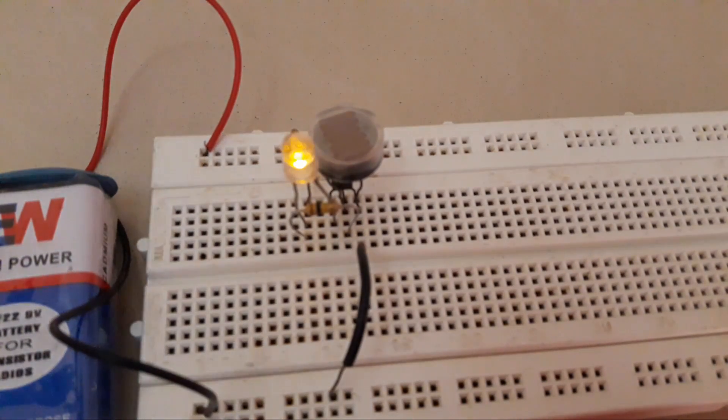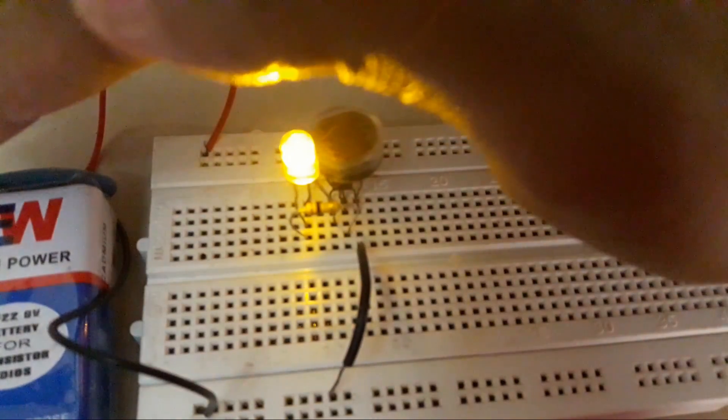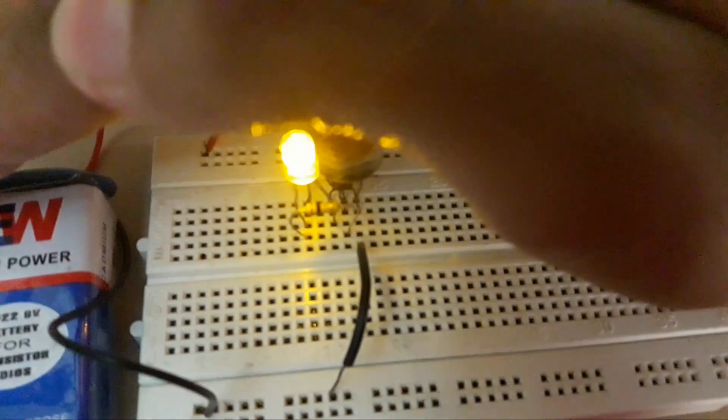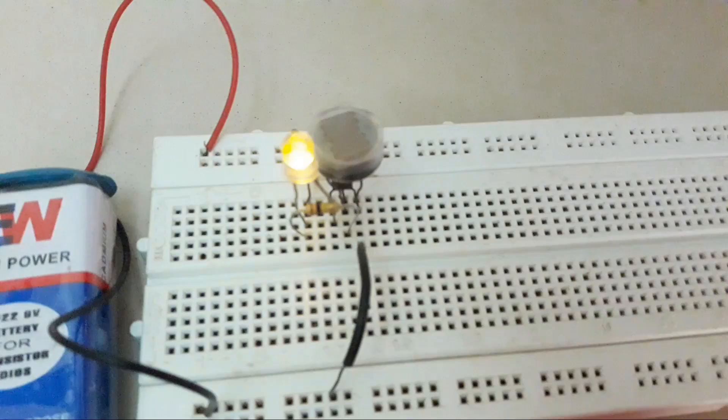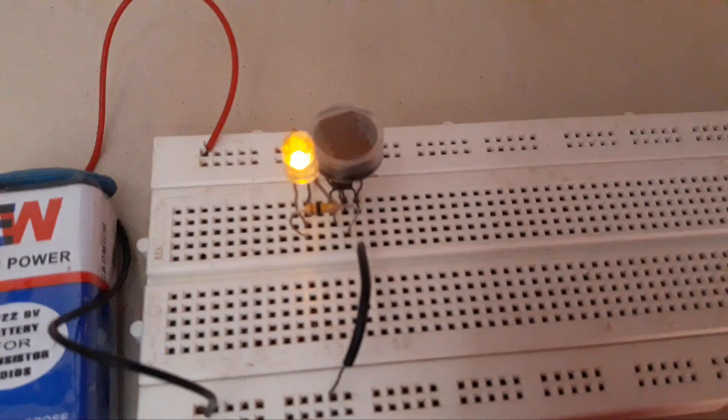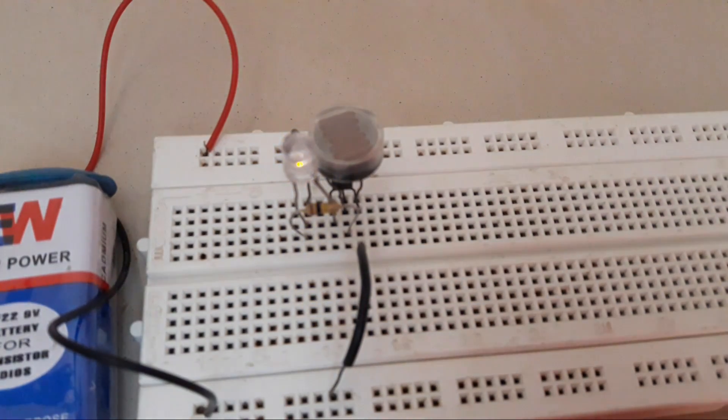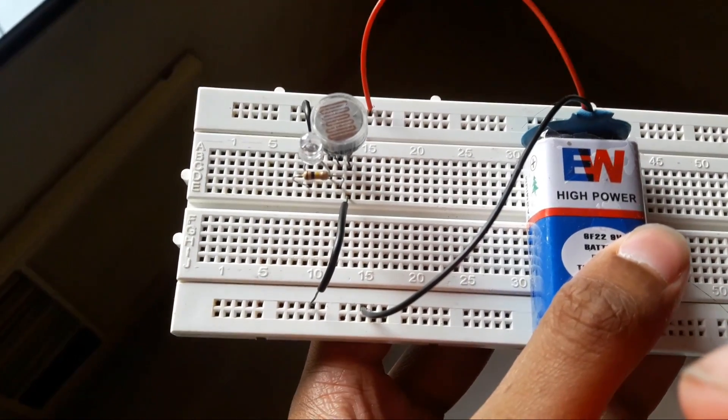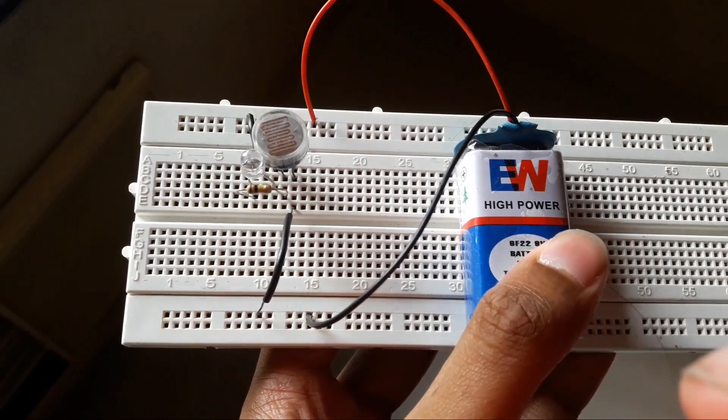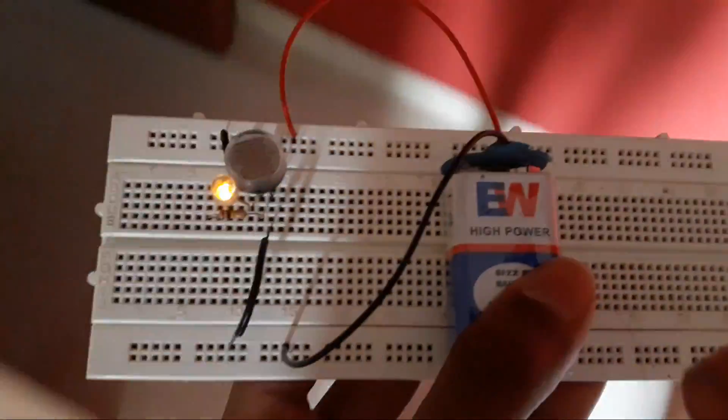As you can see, the LED is glowing in the presence of darkness. So now you can see that the LED will go on and off depending on the brightness the LDR is receiving.